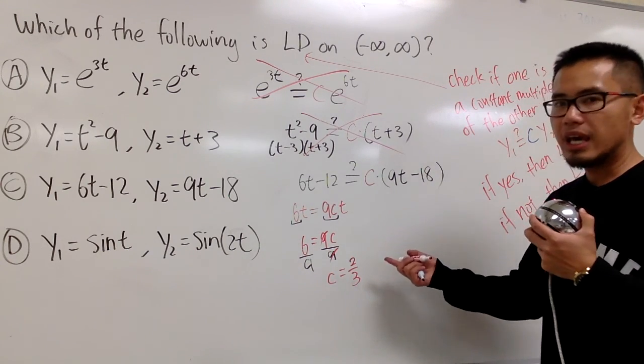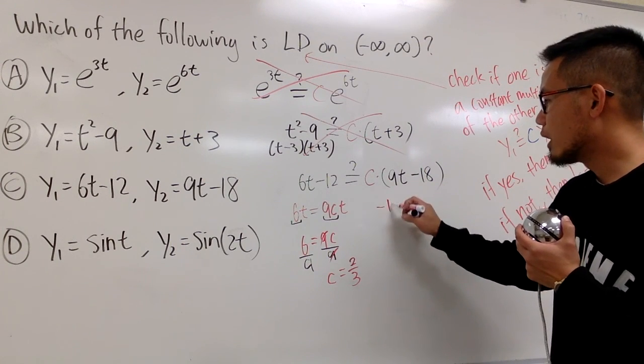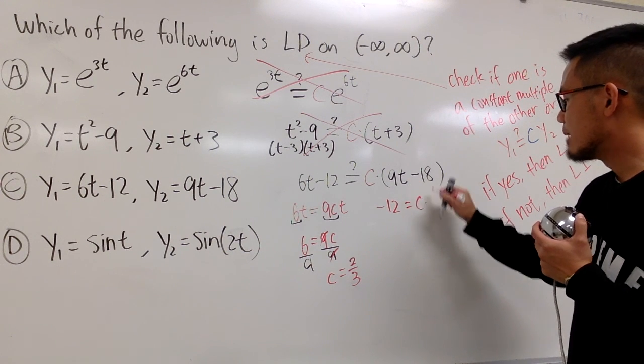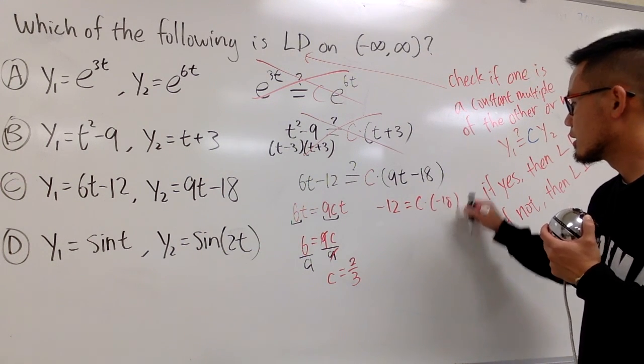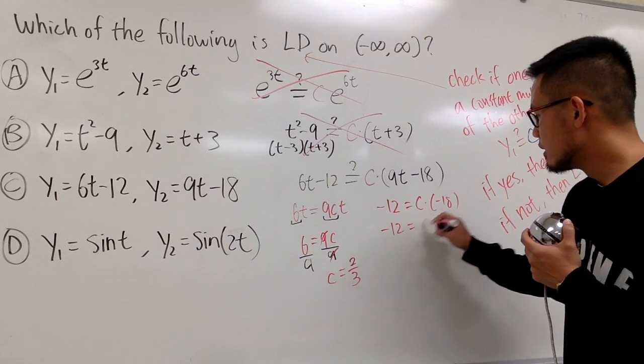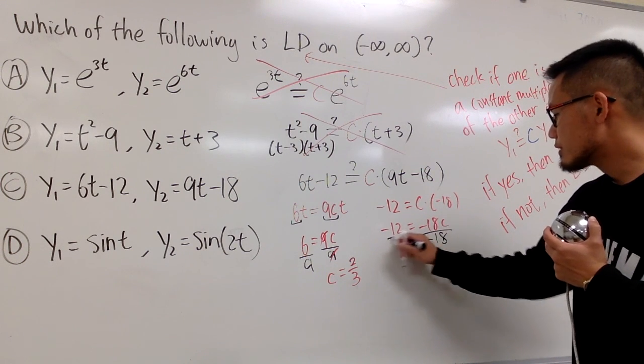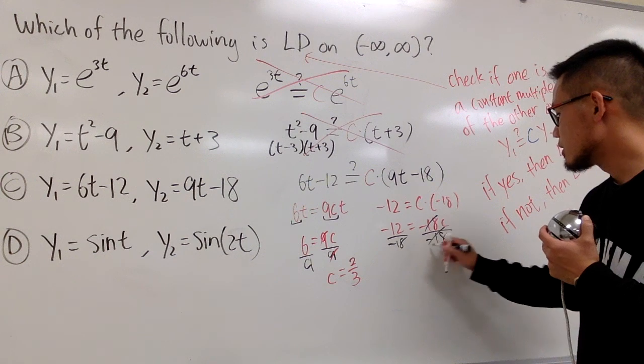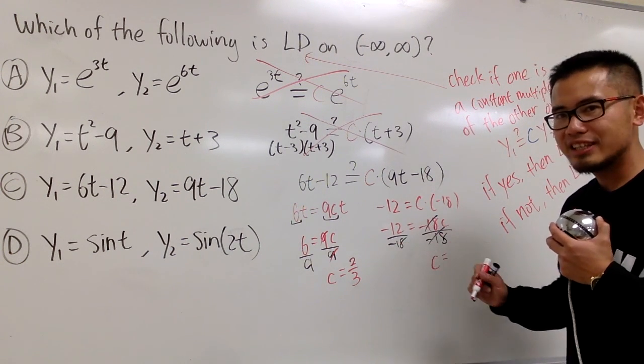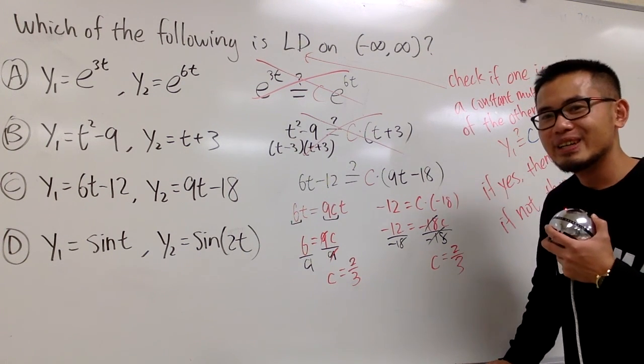Well, it is not the same case. If I want to match the constant term. Right here, I have negative 12, and you see, can I make this equal to c times negative 18? Right, this is the constant term. And you see, this is going to be negative 12, negative 18c, and I will divide by negative 18. On both sides, so they cancel. c is equal to, hmm, negative 12 over negative 18. It happens to be the same as 2 over 3,